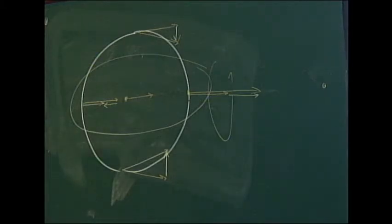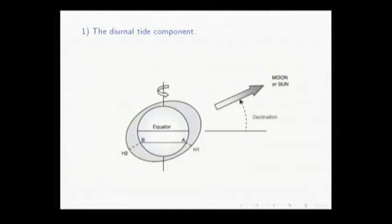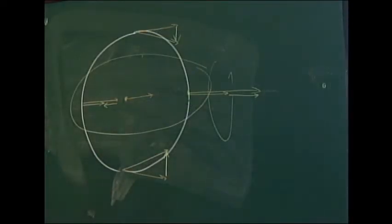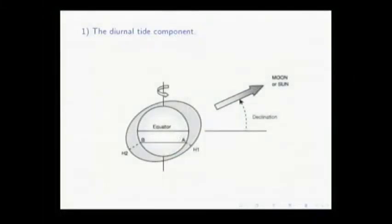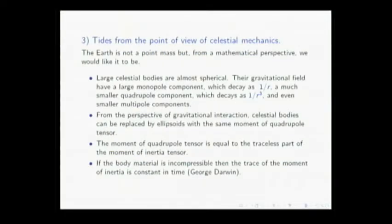If the Earth's axis of rotation were directed towards the Moon, the deformation would still exist but it would cause a permanent tide because we would not notice it. This happens to the Moon, for instance. The Moon is tidally locked to the Earth, so the tidal force of the Earth upon the Moon causes a tide, but for the Moon it's a steady, permanent tide. So tides involve a composition of the tidal forcing and the rotation of the planet, plus the position of the forcing body — the Moon or the Sun.